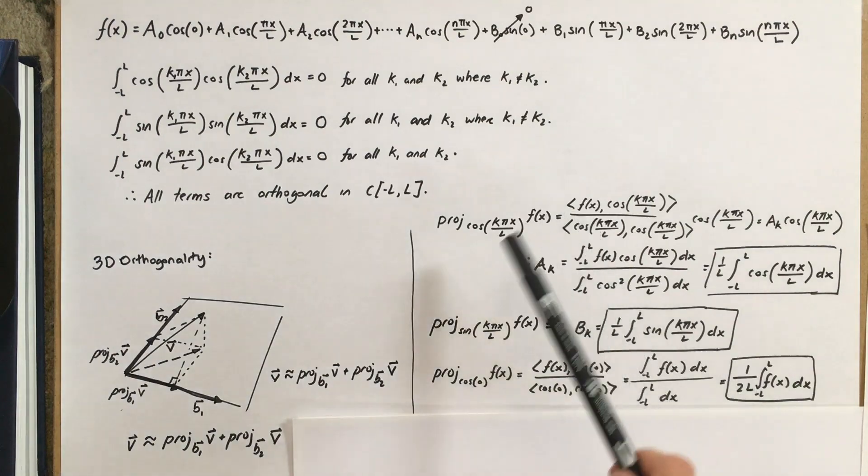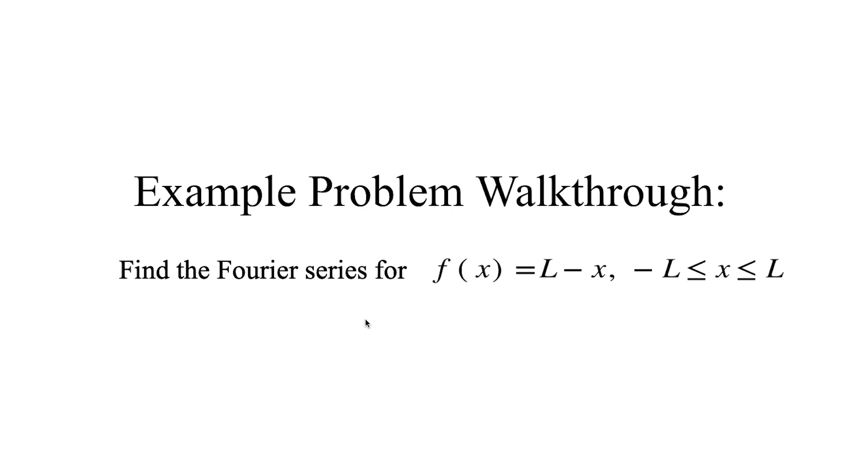So, you use these three equations to find all of these coefficients, and those will give you your Fourier series for f of x. Okay, let's do an example problem. The first one, we'll walk you through with it. So, the first problem is find the Fourier series for the function f of x, where f of x is equal to L minus x, and it repeats once on the interval from negative L to L.